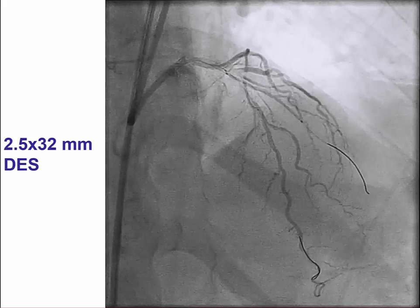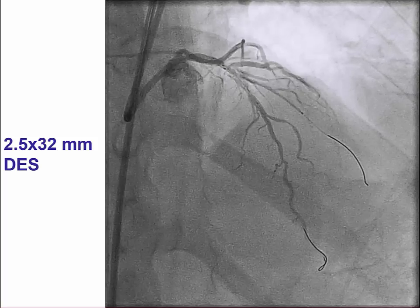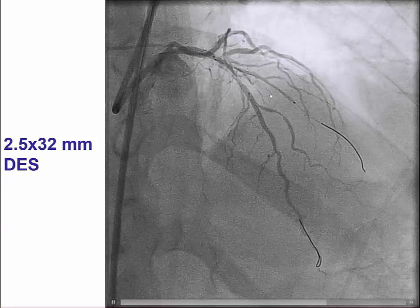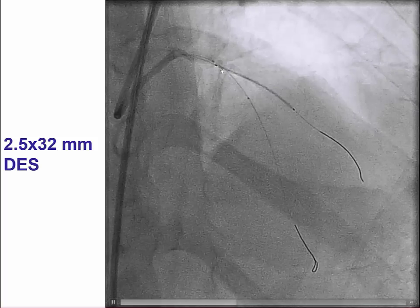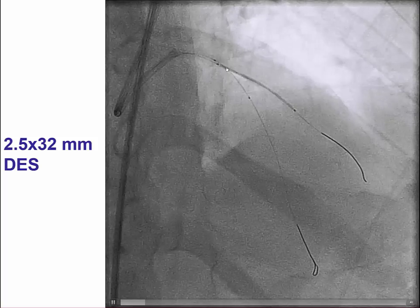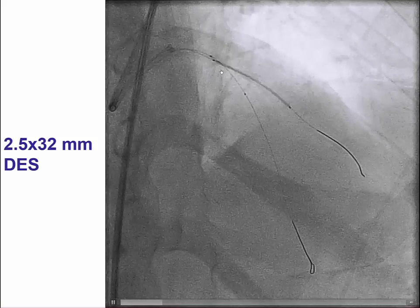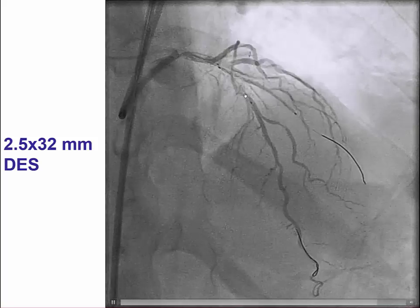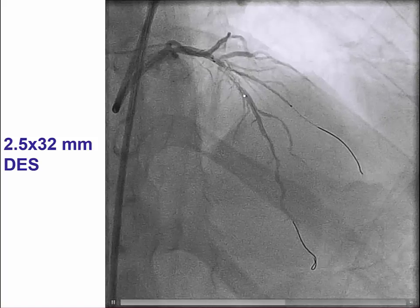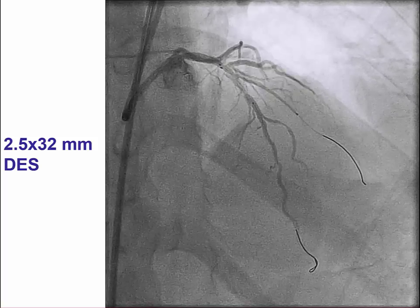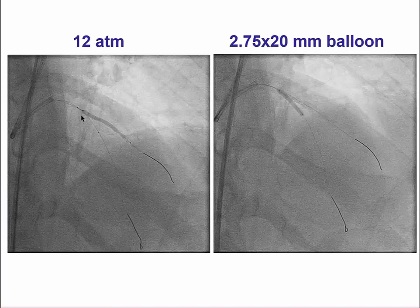So in this particular case, the first step for the DK CRUSH is to place a stent into the side branch with 2-3 mm protruding into the main vessel. As you note, we also have a balloon in the main vessel — in this particular case a 2.5 mm balloon. The stent balloon is deployed in the side branch at 12 atmospheres.